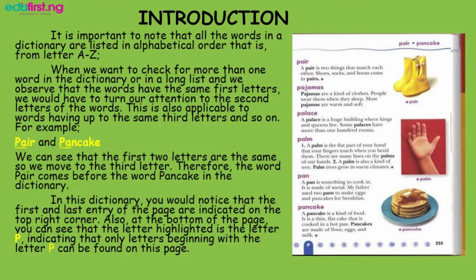Introduction: it is important to note that all the words in the dictionary are listed in alphabetical order, that is from letter A to Z. When we want to check for more than one word in the dictionary or in a long list and we observe that the words have the same first letters, we will have to turn our attention to the second letters of the words. This is also applicable to words having up to the same third letters and so on. For example, let's look at the words 'pear' and 'pancake'.